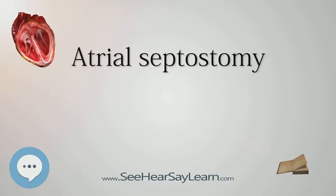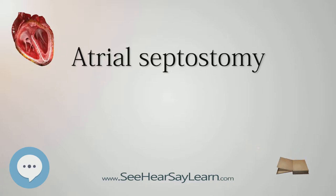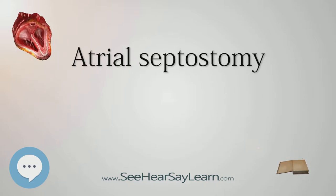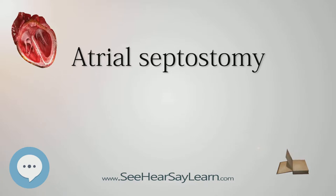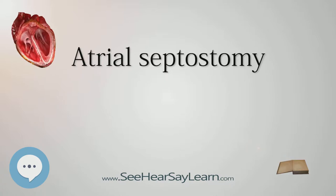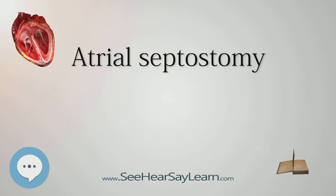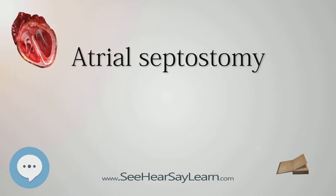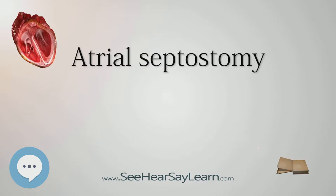Atrial septostomy has also seen limited use as a surgical treatment for pulmonary hypertension. One common technique was developed in 1966 by American cardiologist William Rashkind at the Children's Hospital of Philadelphia. The first atrial septectomy was developed by Vivian Thomas in a canine model and performed in humans by Alfred Blalock. There are two types: balloon atrial septostomy, also called the Rashkind procedure, and blade atrial septostomy, also called static balloon atrial septostomy.